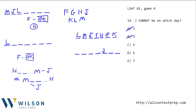If J is in the fifth spot, again L must be first. We need to place F and the GK block. The GK block would have to go in the later spots, but then H and M would be too close together — they need at least four spots minimum between them. So J in the fifth spot is not possible.